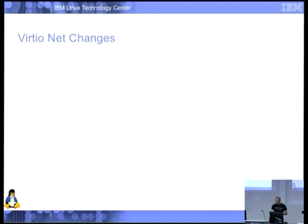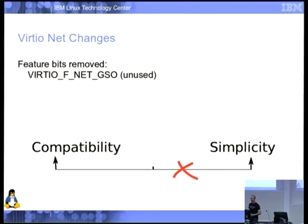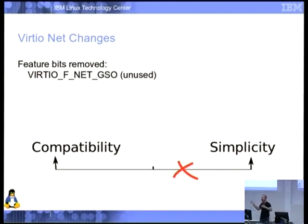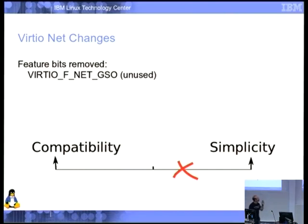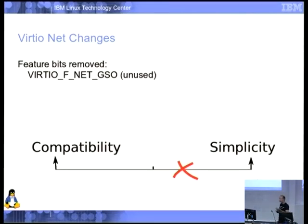VirtioNet changes — this is what everyone cares about. First I pulled out a feature bit that was never used. Modern network cards can do GSO — generic segmentation offload — where you send a big packet and the card chops it up. I thought I'd add a feature bit saying 'we do GSO.' When I came to actually implement it, there are specific types: TSO4, TSO6 for TCP v6, UFO, and the issue with ECN bits in TCP packets. Saying 'I do GSO' is not sufficient — you need four feature bits to say which kinds are supported. So we exploded this into four others, and the generic GSO bit was never ever used by anyone, so out it goes. Mostly VirtioNet has stayed the same.